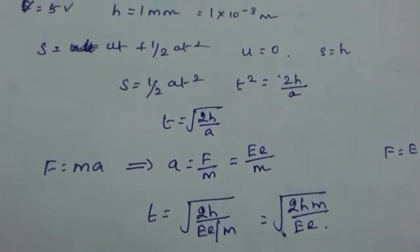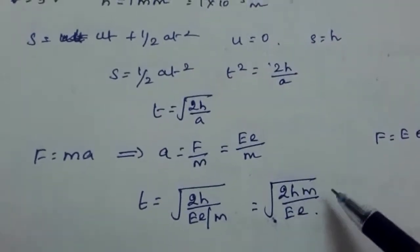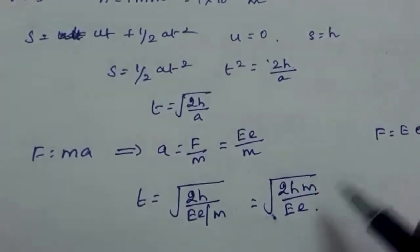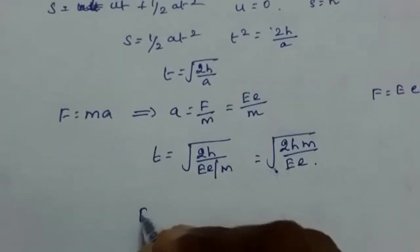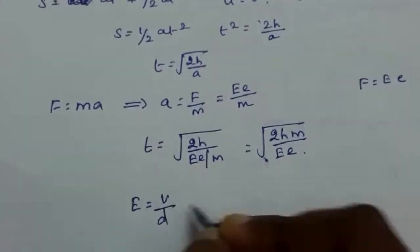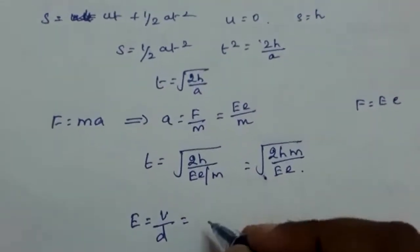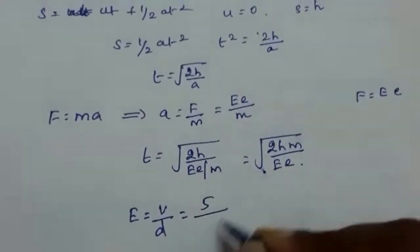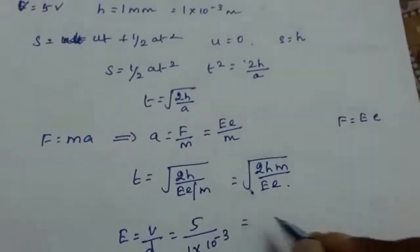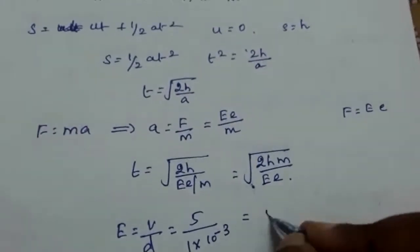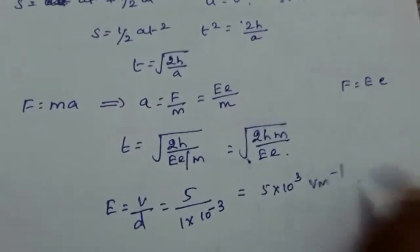Now we know h, and mass is given in the problem. We need to calculate E: E = V/d = 5 volt / (1×10⁻³ meter) = 5×10³ V/m.